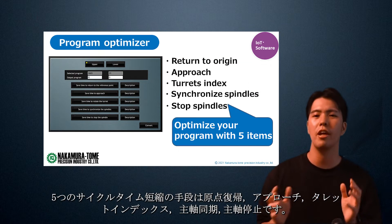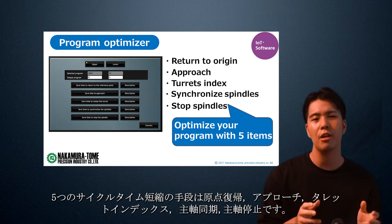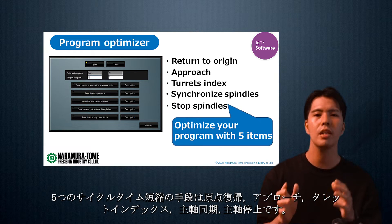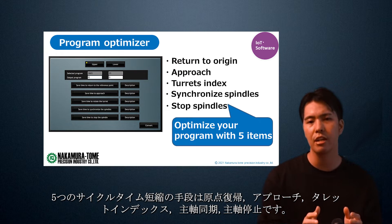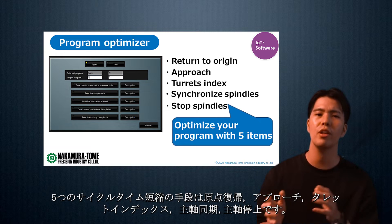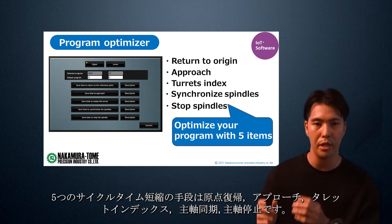The five ways to shorten the time are: shorten cycle time, return to origin, approach, target index, synchronize spindles, and stop spindles.